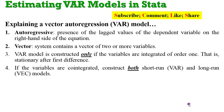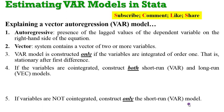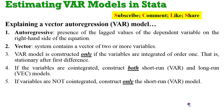A VAR model is constructed only if the variables are integrated of order 1 — that is, the series are all stationary after first difference. If the variables are co-integrated, then go ahead to construct both the short run, which is the VAR model, and the long run, which is a VECM model. But if there is no co-integration, it is the short run model — the VAR model — that is estimated.